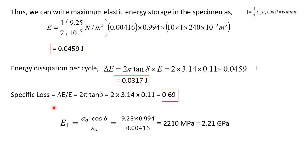Now we can calculate the storage modulus E1, given as sigma naught times cos delta over epsilon naught. Substituting the values: sigma naught is 9.25 megapascal, epsilon naught is 0.00416, and cos delta is 0.994. This gives E1 equal to 2210 megapascal, which is equal to 2.21 gigapascal.